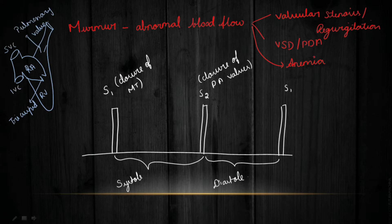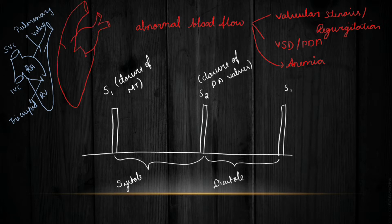On the right side of the heart, we have the pulmonary valve in the pulmonary artery and the tricuspid valve. On the left side, we have the left atrium, left ventricle, the mitral or bicuspid valve, the aorta, and the aortic valve.